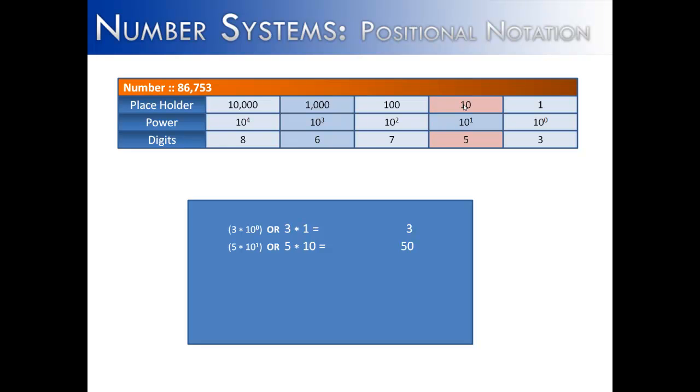Next we have 10 to the power of 1, or 5, which is the digit there, times 10, and that's going to give us 50. And we can do these with each position inside of the number. And eventually, what we end up with is the number itself, 86,753.